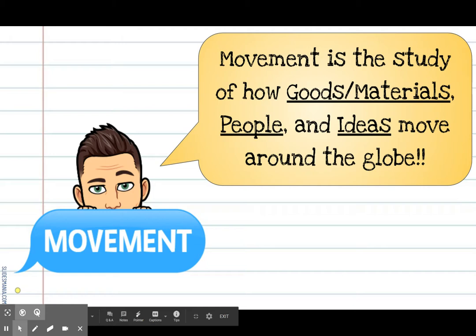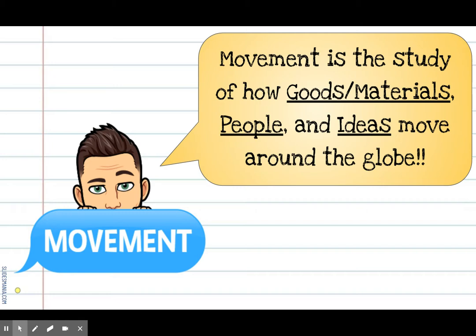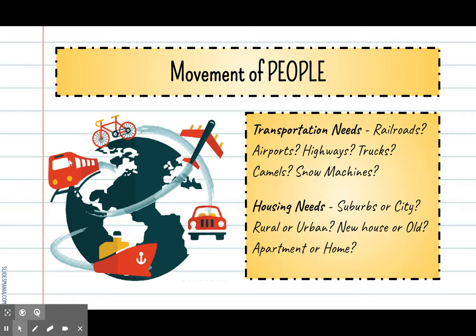Getting started: movement overall is the study of how goods and materials, people, and ideas move around the globe. Take a moment to go ahead and include those three blanks on your note sheet. Now that you've recorded the basic definition of movement, we're going to break that definition into its three parts and look at each type of movement to get an understanding of what it is and look for some specific examples.